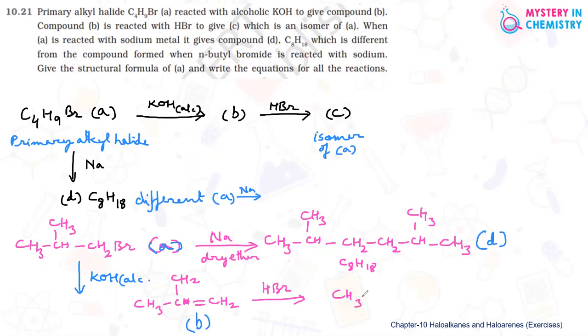And negative part will go to carbon atom where hydrogen is. So we should get tertiary butyl bromide. And this should be C compound, which is actually isomer of A compound. So this is the right answer.